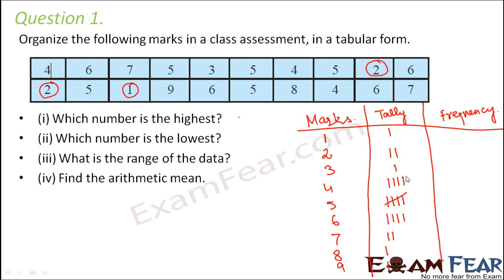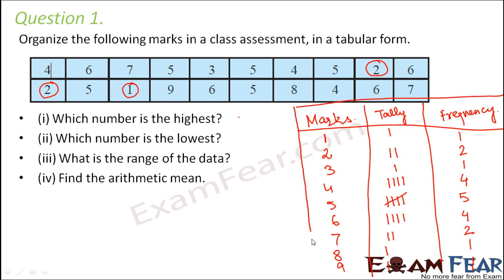Now why do we have these tally marks? It helps us because when you are counting how many times a value like 4 exists in this huge set of data, every time you see a 4 you just put a straight line. So whatever number of straight lines you get, the frequency is that much. This is a very organized tabular representation of the data, and it is known as a frequency distribution table. You will learn about this in more detail in class 8, but for now, this shows how beautifully we can organize a group of data.